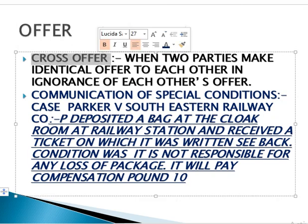A cross offer occurs when two parties make identical offers to each other in ignorance of each other's offer. For example, A sends a letter to B saying he wants to purchase B's house for 40,000, and B, unaware of this, also writes to A saying he is interested in selling his house for 40,000. This is a cross offer and is also not a valid acceptance.